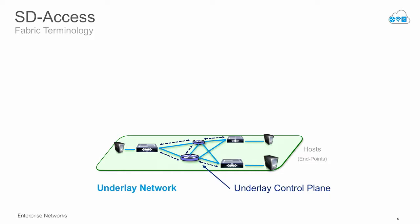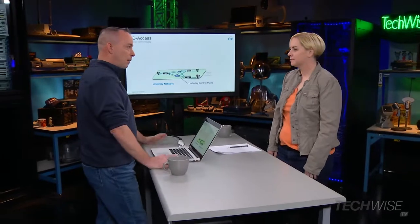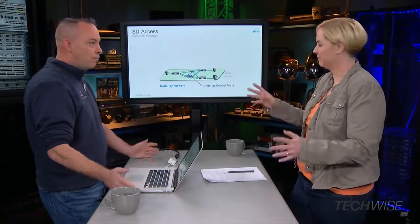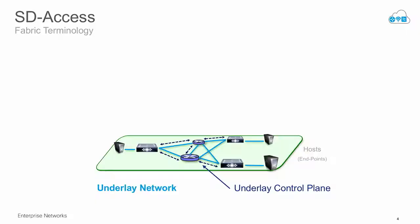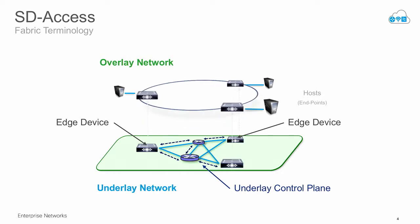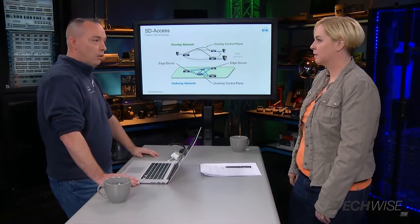Maybe we should dive into first what is a fabric — especially what is campus fabric, what's unique about that. The campus fabric is really based on this concept of an underlay and an overlay. If you hear the term fabric, that's what people mean — they mean an overlay. You start out with your traditional network — switches, routers, protocols. They have their own control plane. But we're using this now just as a transport mechanism. That's where the term underlay comes from — it's just underneath.